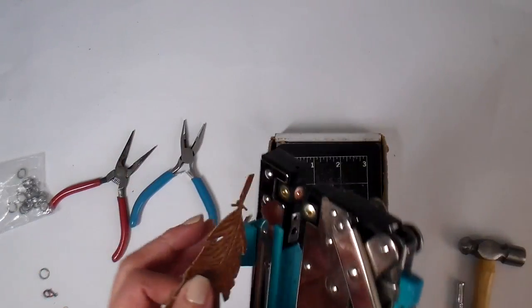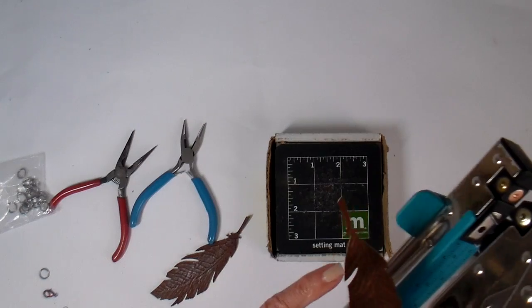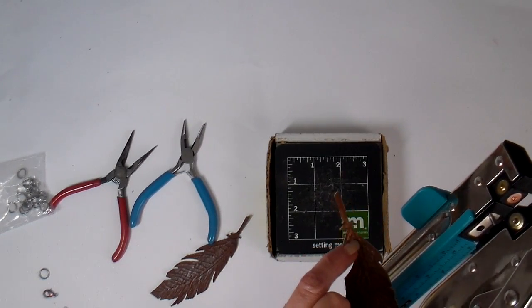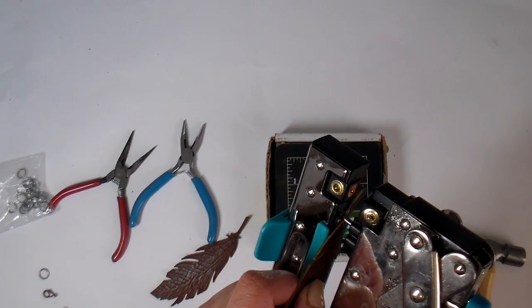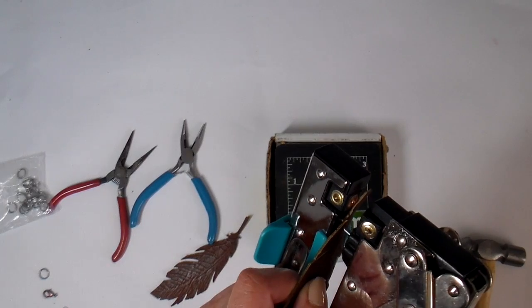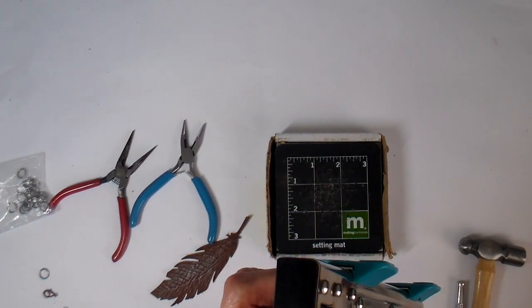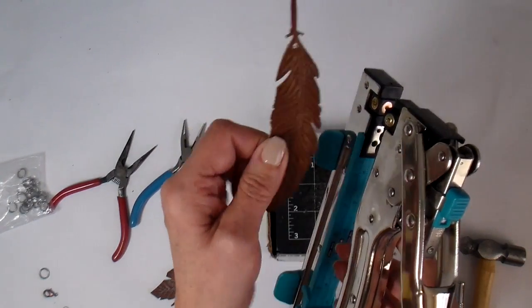I'm using my crop-a-dile. And there's like the stem of the feather. I'm putting the hole where there's a little bit more of the leather, so in just a little ways. Making sure that I'm not missing it. And poking the hole.